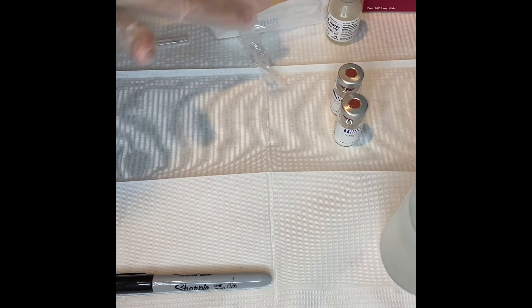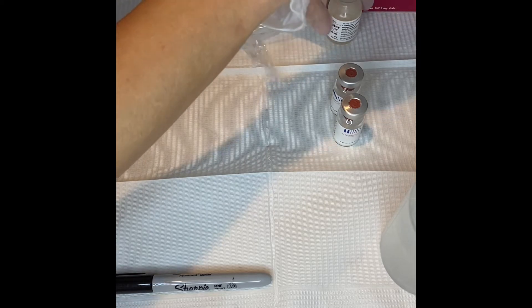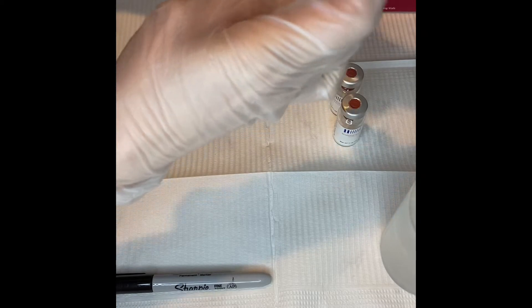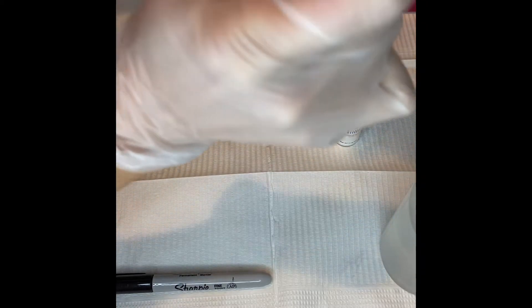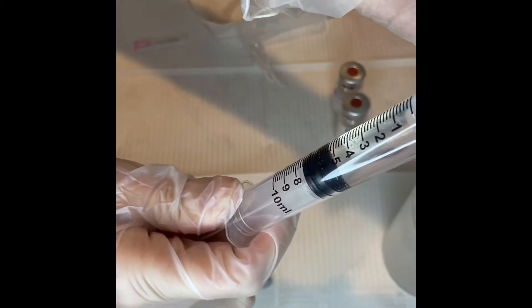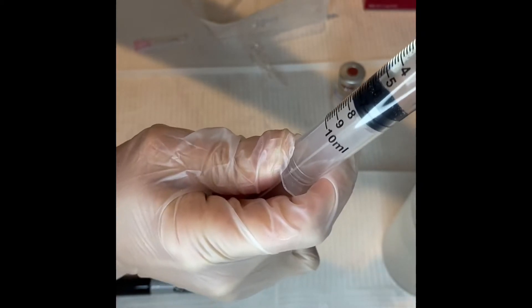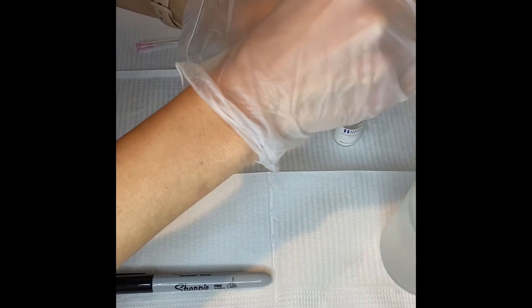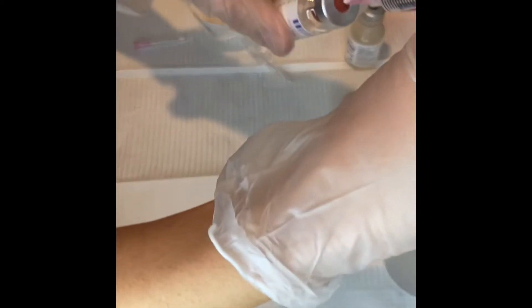With the 10cc syringe, draw up to just a little past the six - some of it gets lost in the hub of the needle, so about right there. There is no vacuum on it, so you have to push it in.